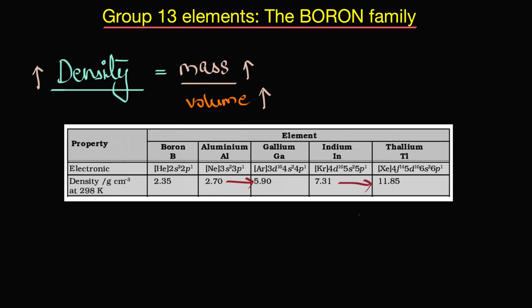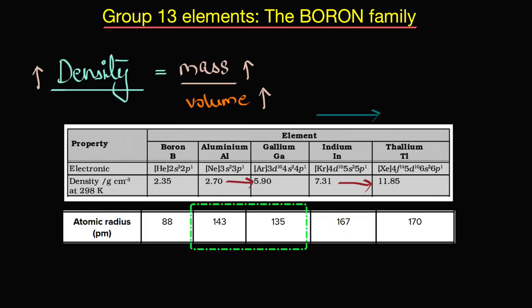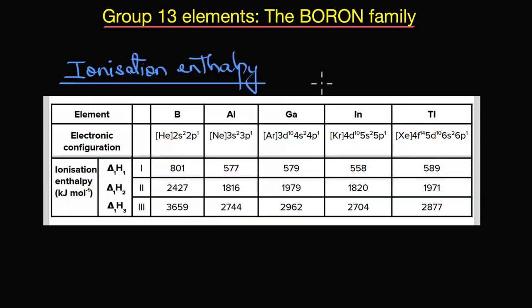While atomic mass increases as we go down the group, the atomic size or volume actually decreases from aluminium to gallium due to the poor shielding effect of the d electrons. As volume decreases, density increases sharply. Something quite similar happens between indium and thallium — the atomic size does not increase proportionally to the atomic mass, causing a sharp increase in density.